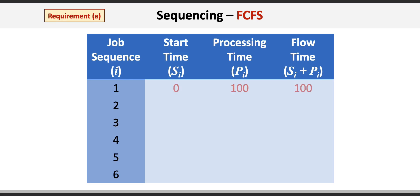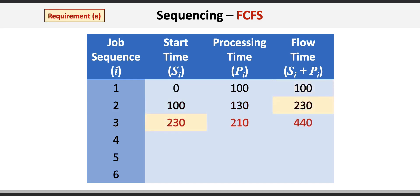Starting with job 1: the start time is 0 minutes, the job takes 100 minutes to process, so the flow time is 0 + 100 = 100 minutes. Job 2 starts at 100 minutes, takes 130 minutes to process, resulting in a flow time of 230 minutes. Job 3 then starts at 230 minutes and takes 210 minutes to process, resulting in a flow time of 440 minutes.